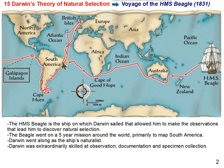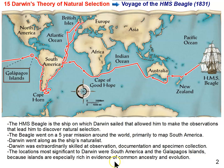Darwin went along as the ship's naturalist — not as the cartographer. He went along as the ship's naturalist, because most ships that went out in these days had a naturalist along with them, like a science officer on Star Trek. Darwin basically went along as a science officer. He was extraordinarily skilled at observation, documentation, and specimen collection. He collected, drew, thought, wrote, and read. The most significant places that they stopped, to Darwin anyway, were South America and the Galapagos Islands — because it turns out islands are really good for finding evidence of evolution.